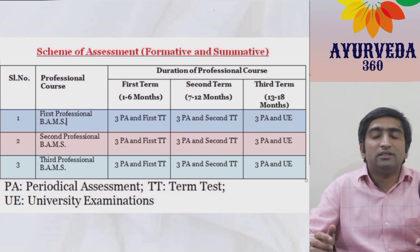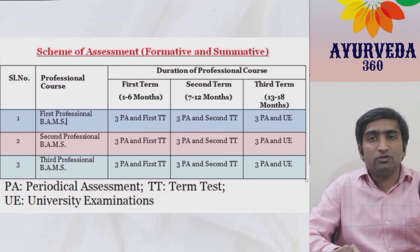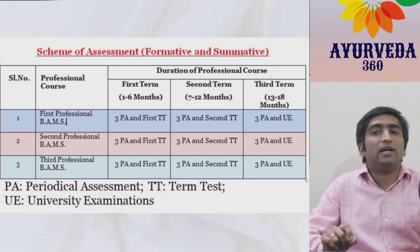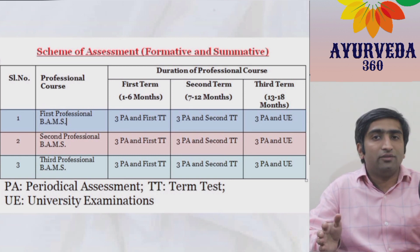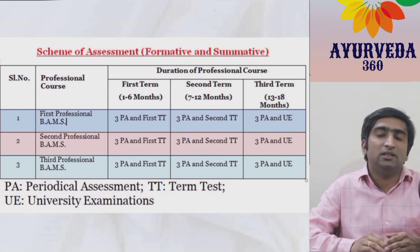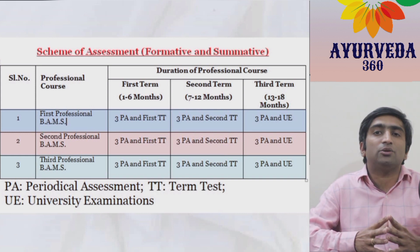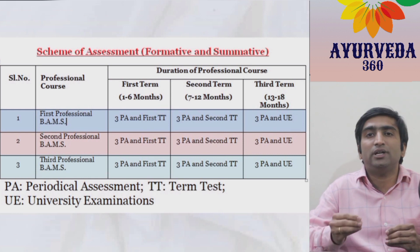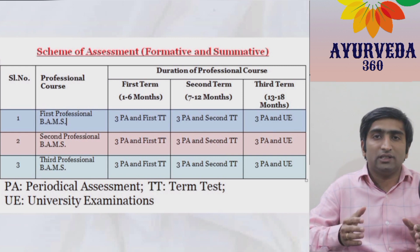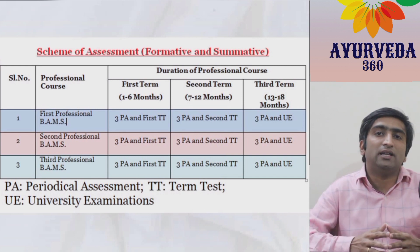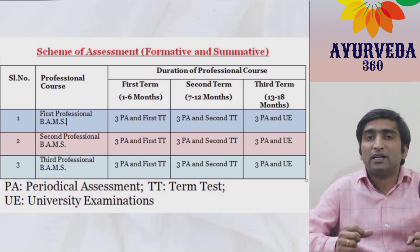The one and a half years of each professional course should be the time when student performance is analyzed. To achieve this, NCISM has divided one professional course into three parts: the first six months is called the first term, the second six months is the second term, and the third six months is the third term. For example, a student joining on October 1st, 2023 will have the first term running up to March 2024.